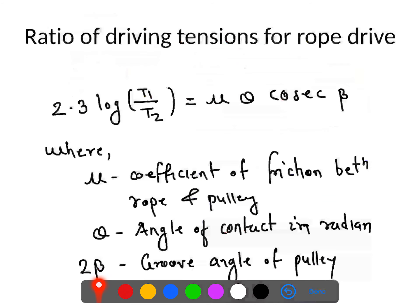To calculate the power transmitted by rope drives, all the formulas used for power transmission in flat belt drives, compound belt drives, or V-belt drives remain applicable. The only difference is in the ratio of driving tension for rope drives. The ratio of driving tension T1 to T2 is given by: 2.3 × log(T1/T2) = μ × θ × cosec β, where μ is the coefficient of friction between the rope and pulley, θ is the angle of contact in radians (must be taken in radians, not degrees), and 2β is the groove angle of the pulley.